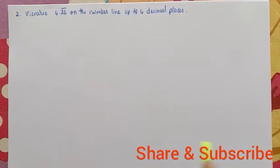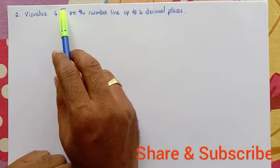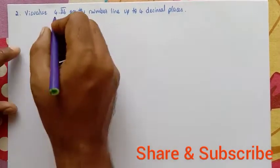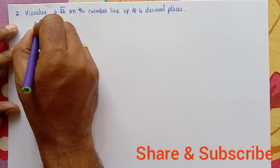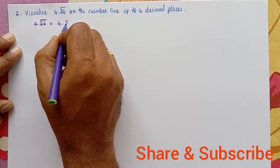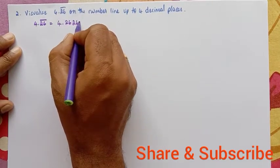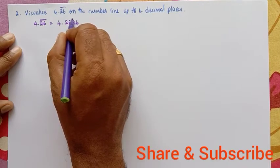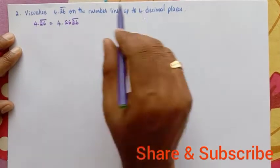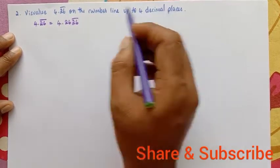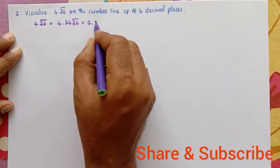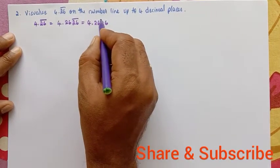Next: visualize 4.26 bar on the number line up to four decimal places. Here, 4.26 bar means 26 is the recurring part, which can be written as 4.2626. We will visualize it up to four decimal places, so we consolidate it as 4.2626.